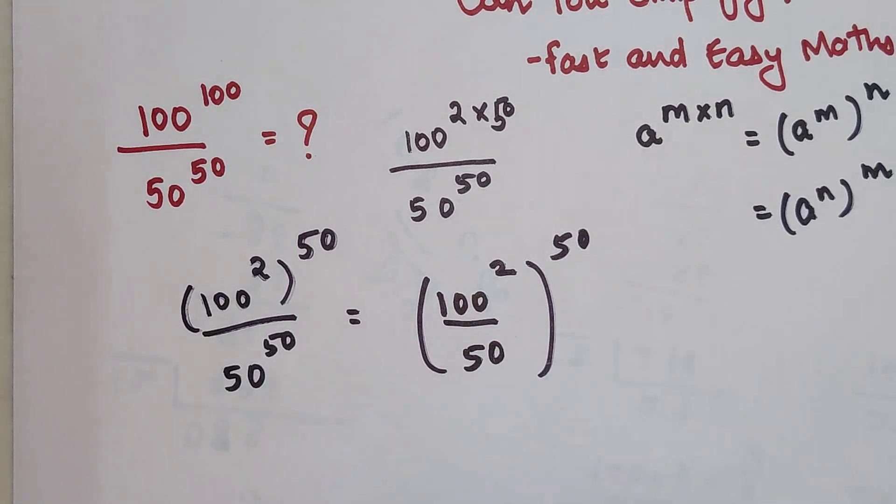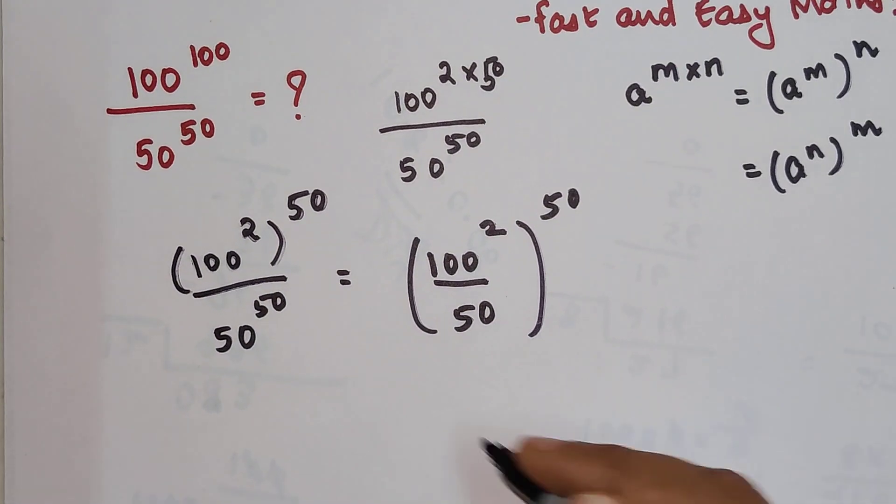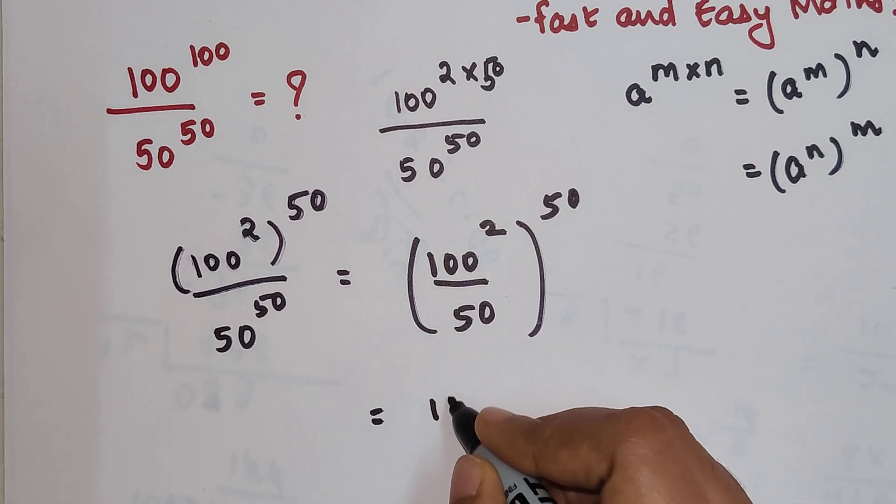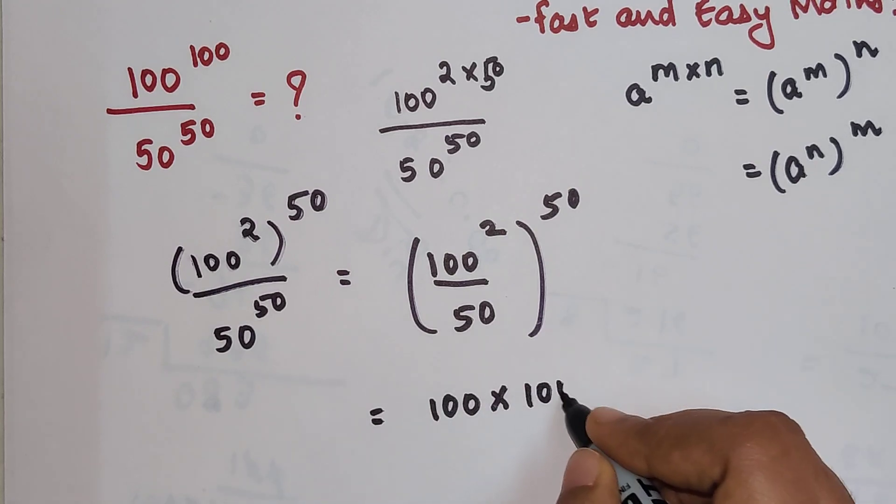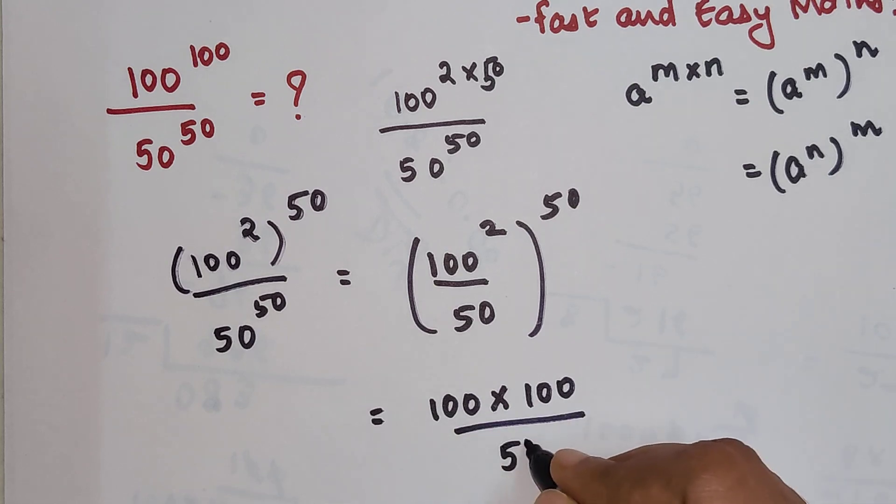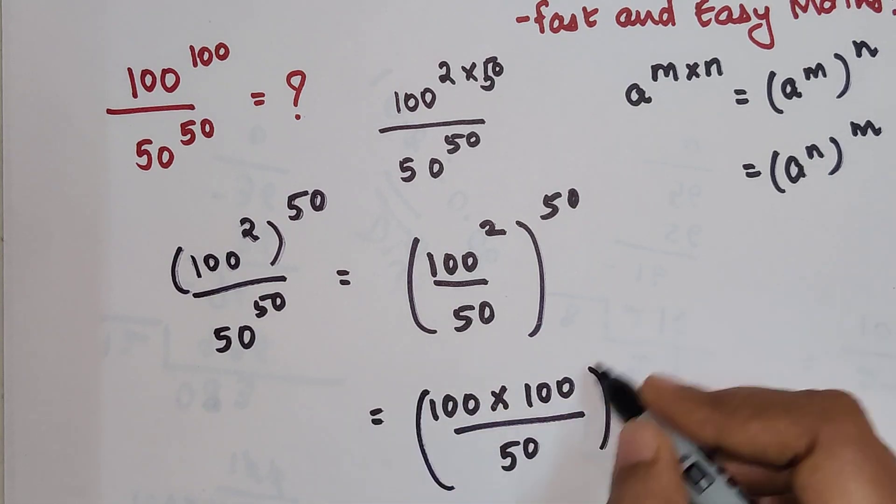Why? Because both of them are raised to the same power. So now this can be written as 100 times 100 divided by 50, the whole raised to 50.